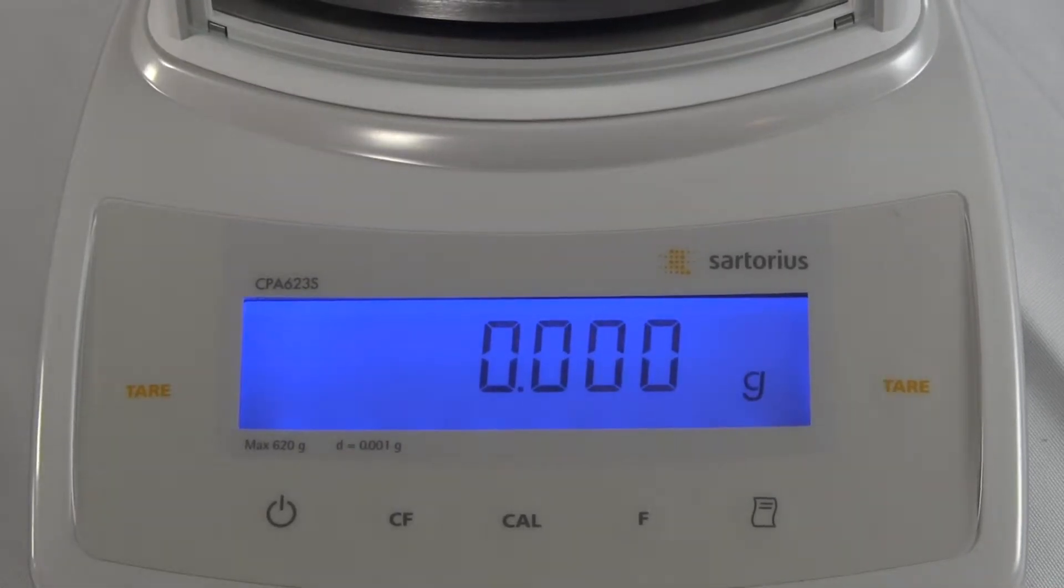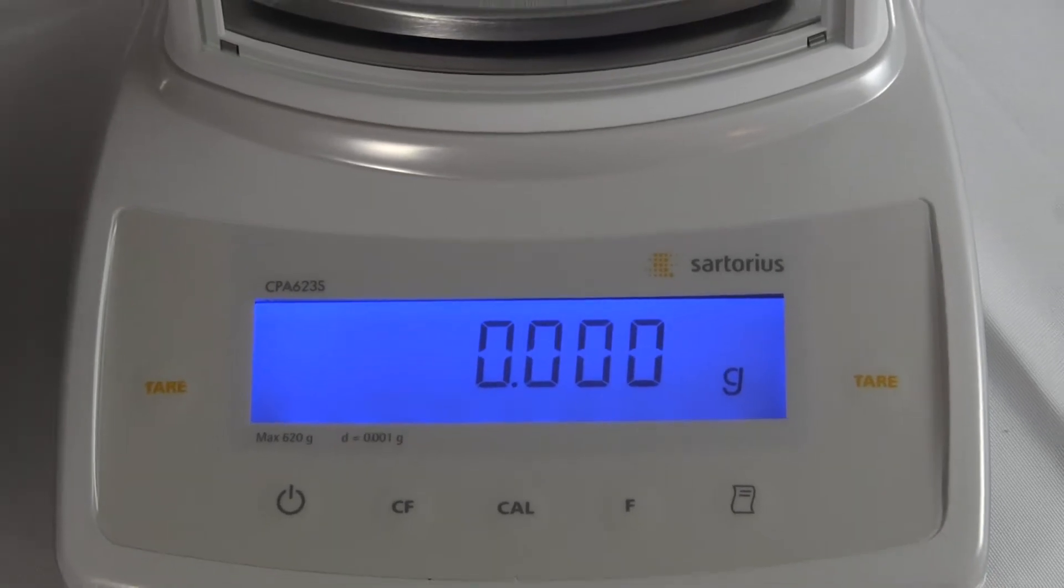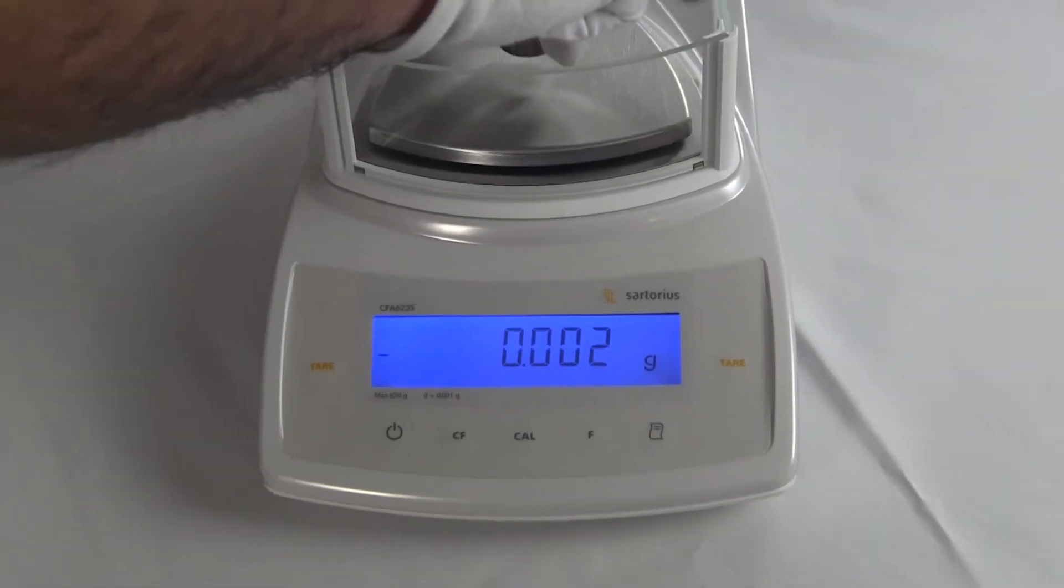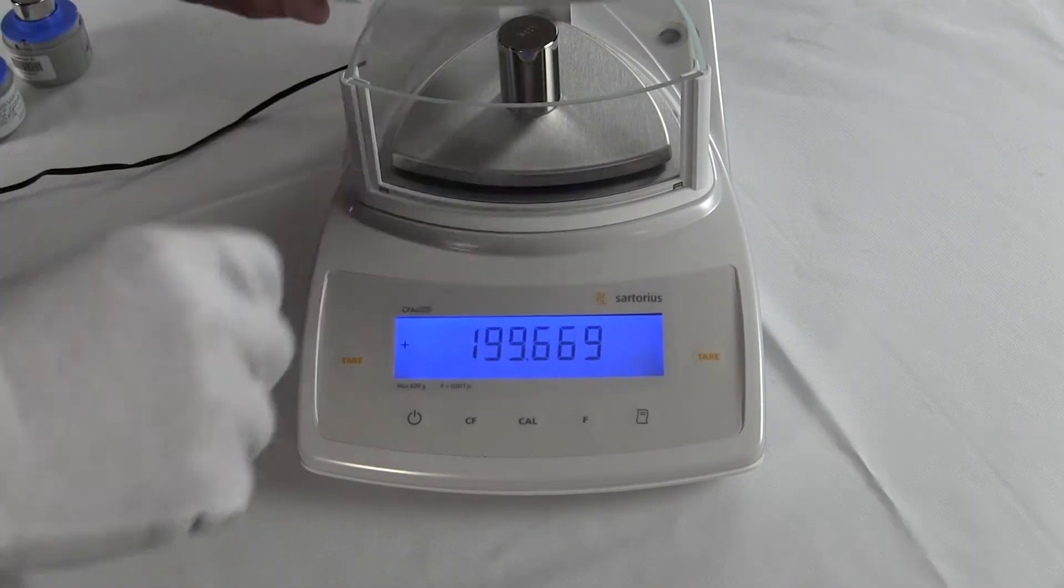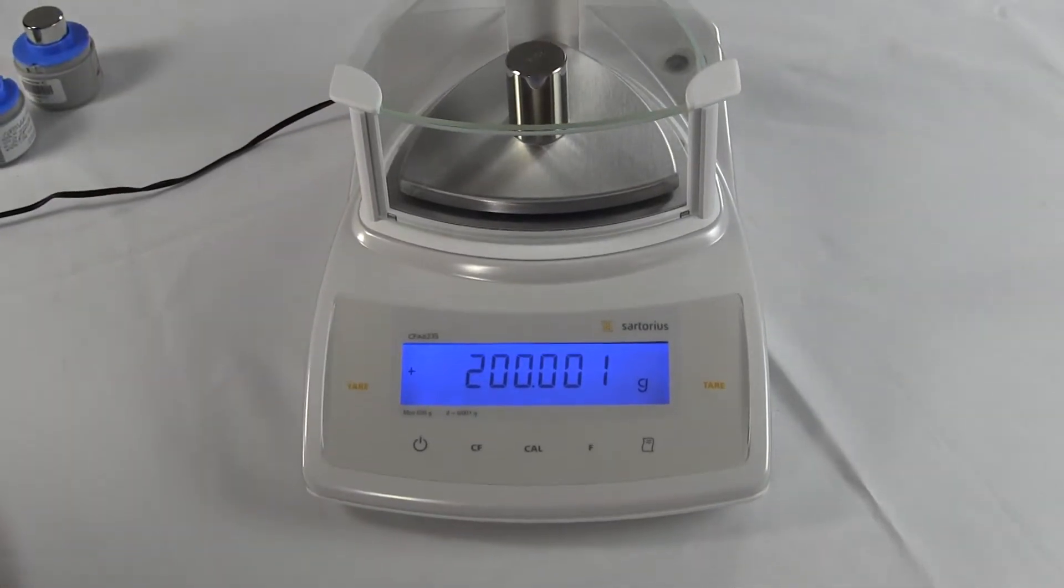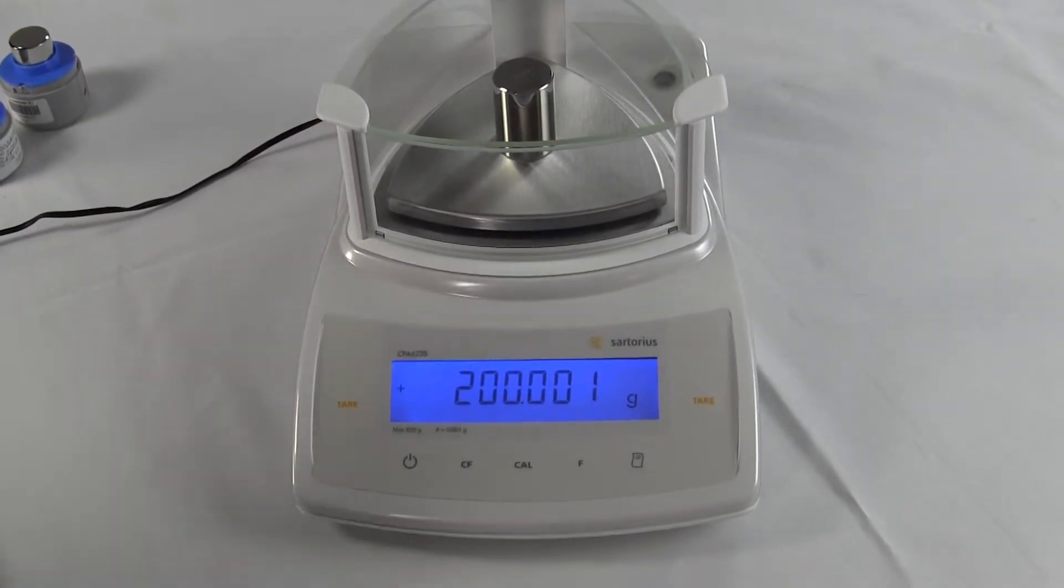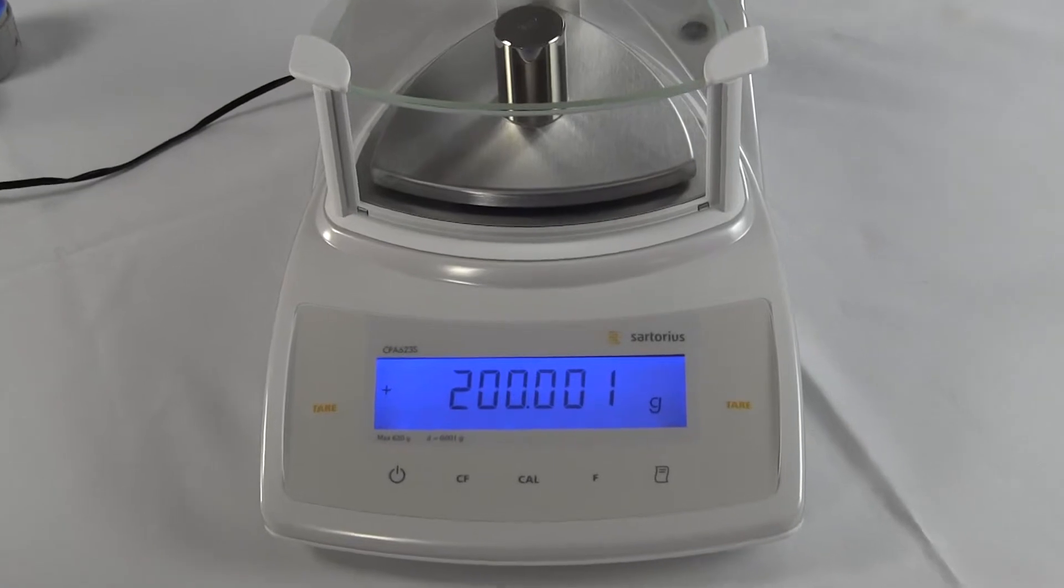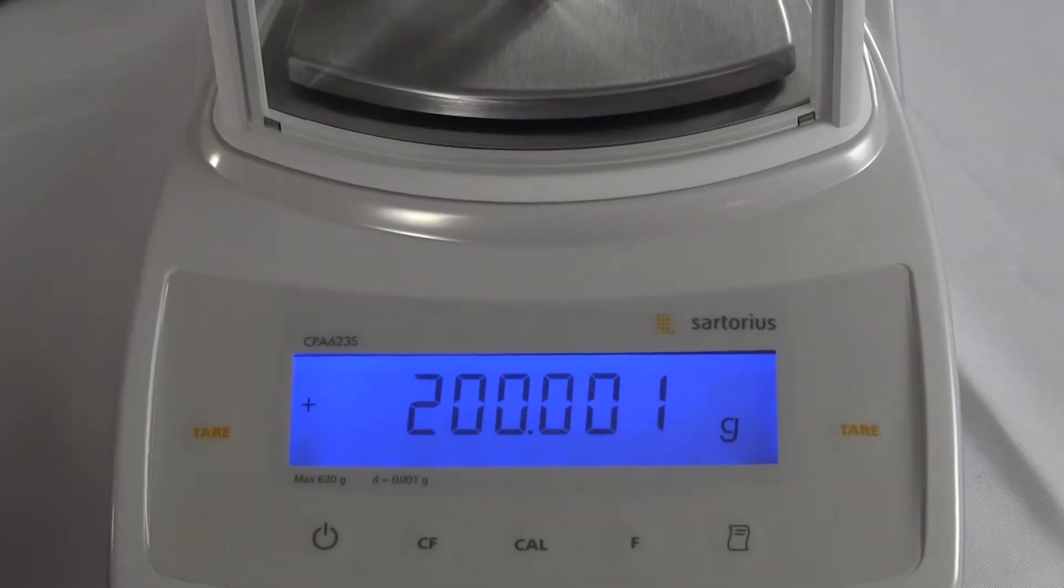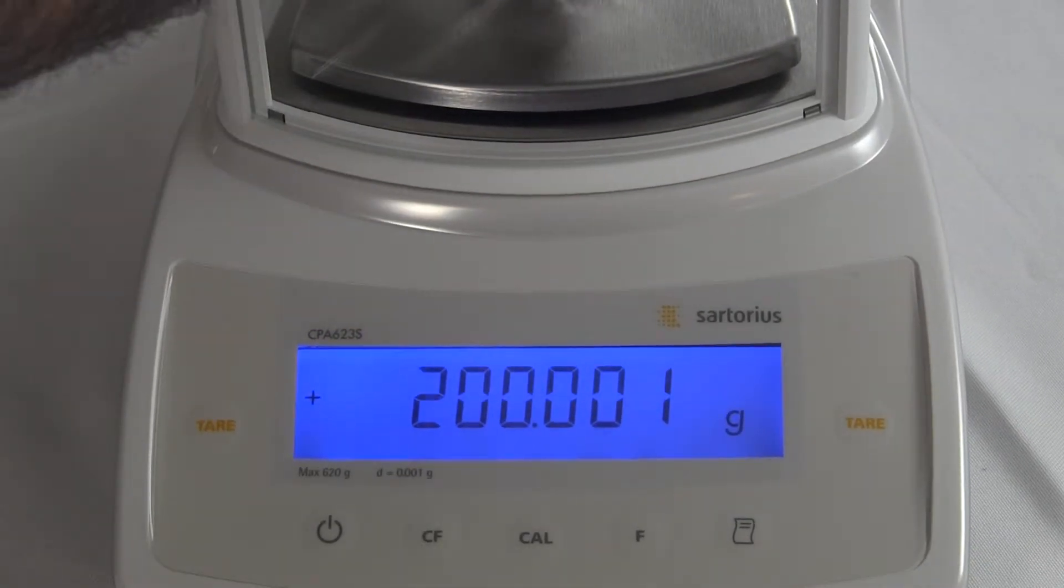So now it's CC and it goes to zero. So the balance has now been calibrated. And we'll take the 200 gram weight, put it right on the platform. And this balance is plus or minus a milligram. So we have a 200 gram weight. It's right within tolerance.